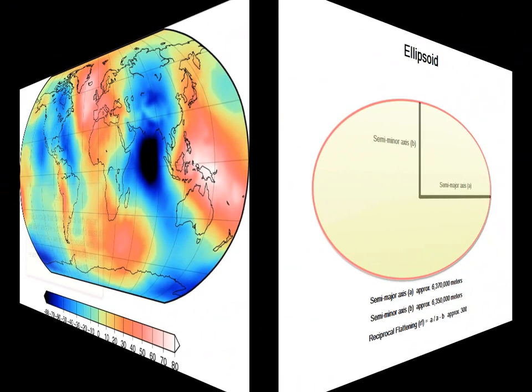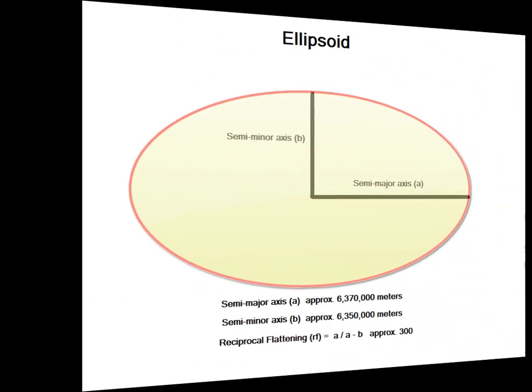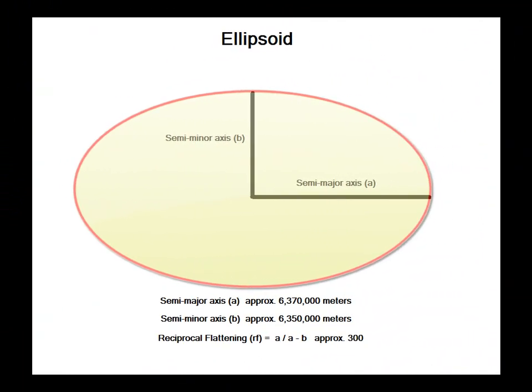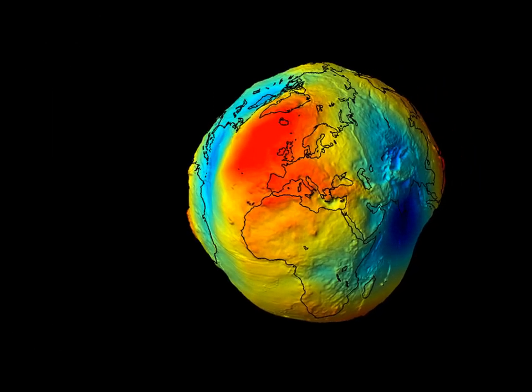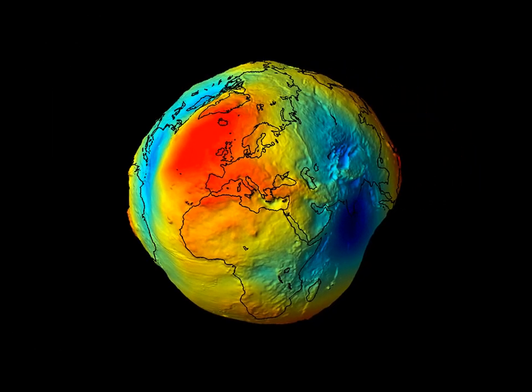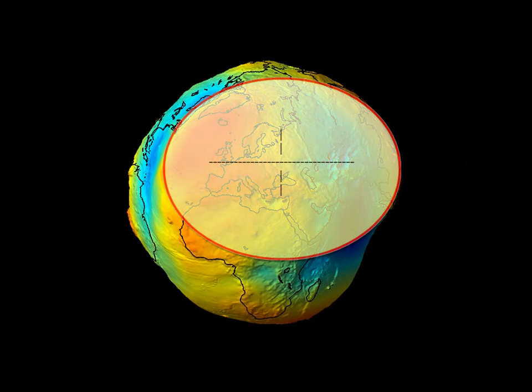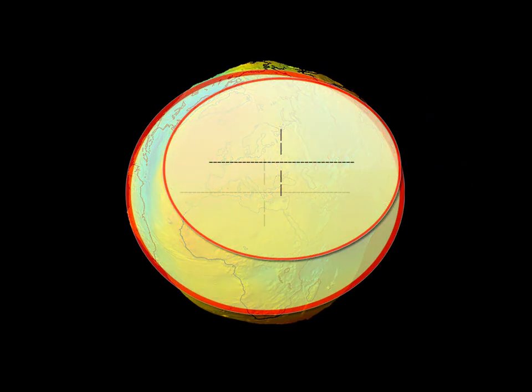Finally, there is a surface that best describes the earth and can be developed mathematically by a semi-major axis and a semi-minor axis. This is called the ellipsoid. The semi-major axis is approximately 6,370,000 meters. The semi-minor axis is about 20,000 meters smaller than that. The goal of the geodesist is to find an ellipsoid that best matches the geoid.